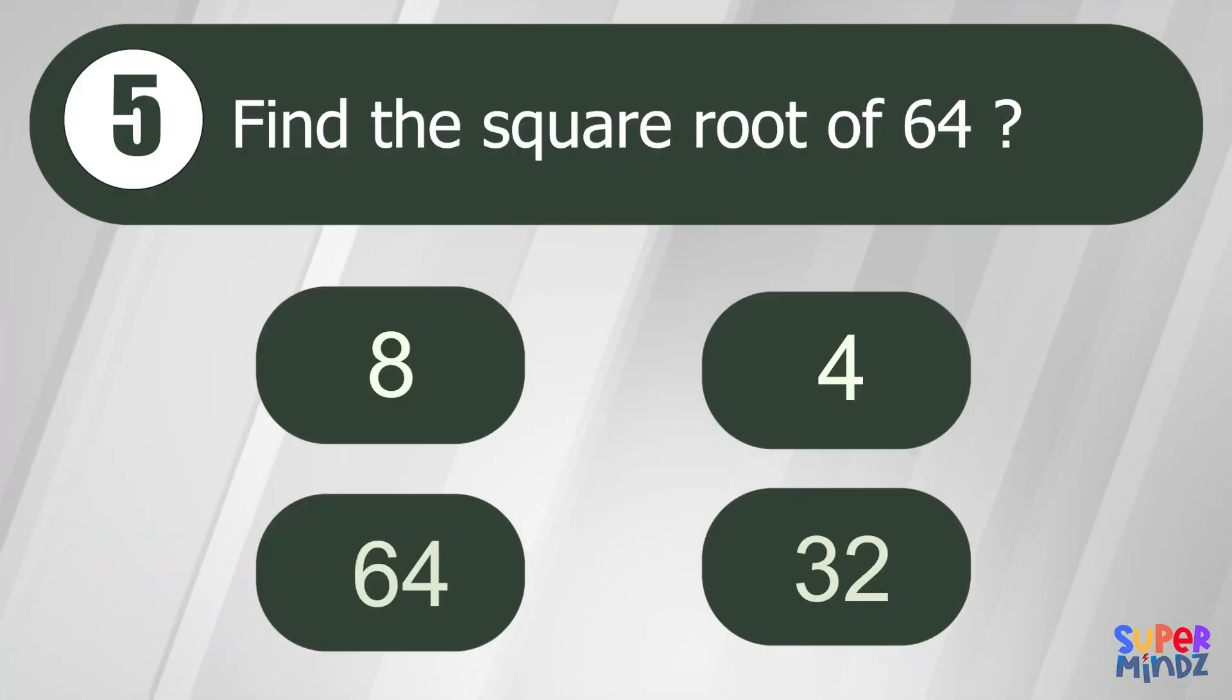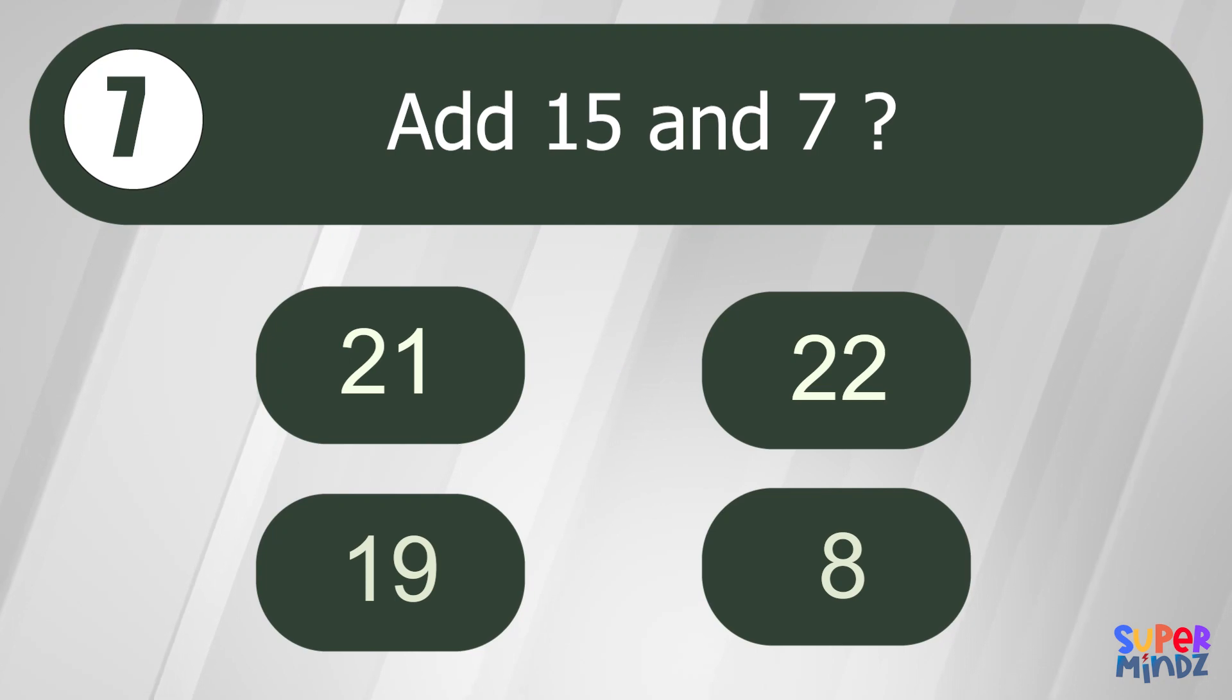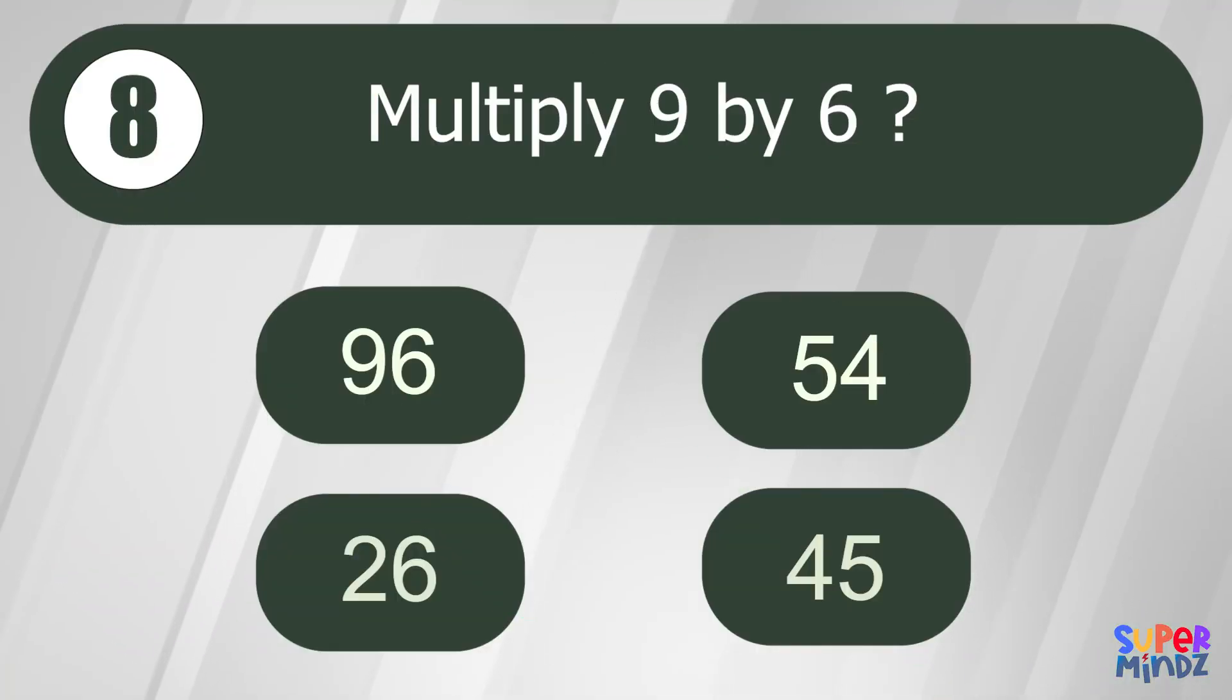Find the square root of 64. 8. What is 9 squared? 81. Add 15 and 7. 22. Multiply 9 by 6. 54.